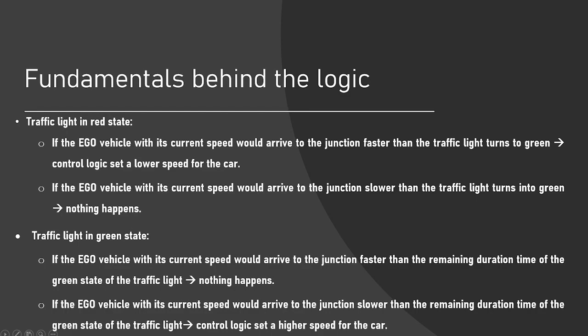The fundamentals behind our logic is that our traffic lights have two states only, red and green. If there is a red state and our vehicle with the current speed arrives to the junction or the signalized intersection faster than the traffic lights turns to green, we have to slow down the car a bit because if we continue with the current speed, we have to stop at the traffic light.